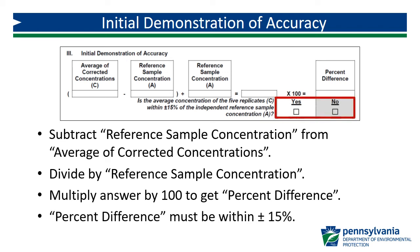Check the appropriate box for whether the percent difference is within plus or minus 15%. If the percent difference is within plus or minus 15%, the initial demonstration of accuracy has been passed for this analyst using this specific method, and he or she can move on to the initial demonstration of precision.